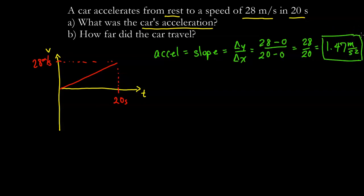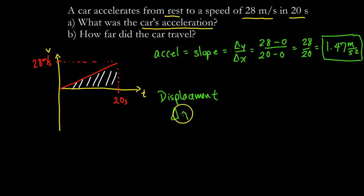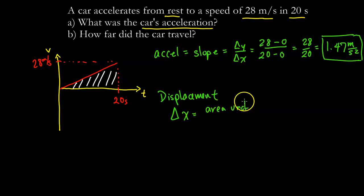Part B says how far did the car travel. I'm going to shade in the area under the line on the graph, and that area represents the displacement. The displacement — also written as delta x — is the area under the curve of the velocity versus time graph.